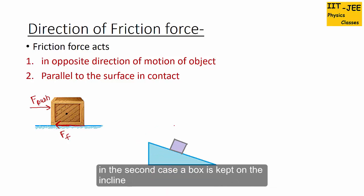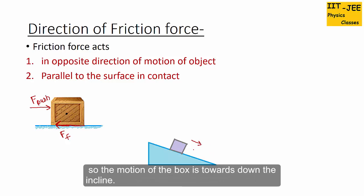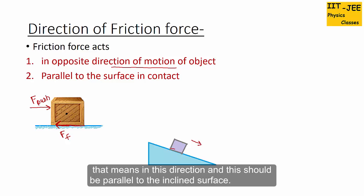In the second case, a box is kept on an incline and is moving down the incline. The motion of the box is toward the bottom of the incline, so friction force acts in the opposite direction — up the incline — and is parallel to the incline surface.